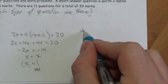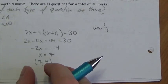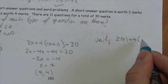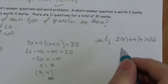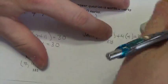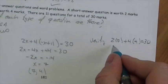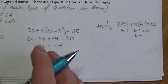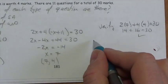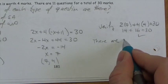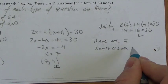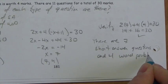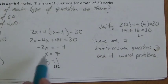Plugging x equals 7 into the point for equation one: y equals negative 7 plus 11 equals 4. Now let's verify in equation two: 2 times 7 plus 4 times 4 equals 14 plus 16 equals 30. Yes. So (7, 4) is a solution to the system. But we have to interpret: there are 7 short answer questions and 4 word problems. We need evidence that we understand what that point means.